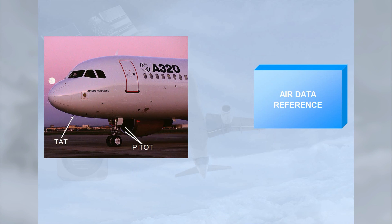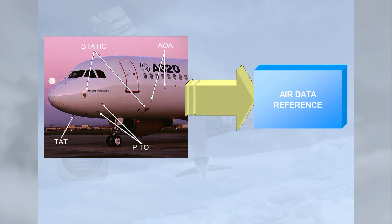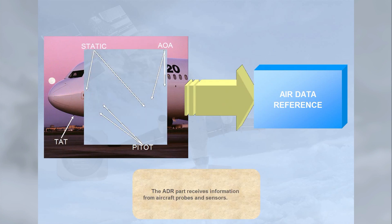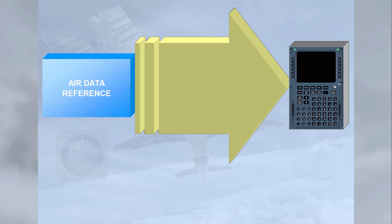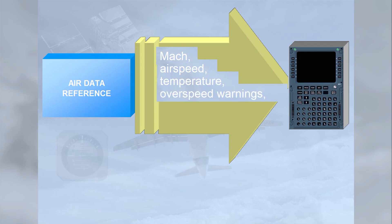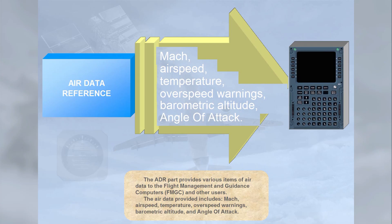The ADR part receives information from aircraft probes and sensors, and provides various items of air data to the Flight Management and Guidance Computers, FMGC, and other users. The air data provided includes Mach airspeed, temperature, overspeed warnings, barometric altitude, and angle of attack.